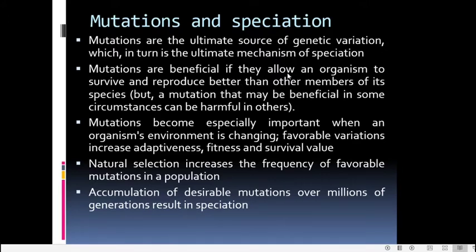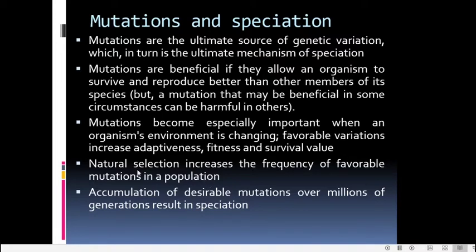If mutations are beneficial, they allow the organism to survive and reproduce better than other members of its species. Mutations become important when an organism's environment is changing, because if the mutation leads to a favorable variation, those organisms showing the mutation will have adaptiveness, fitness, and survival value. Natural selection increases the frequency of favorable mutations in a population, and the accumulation of such desirable mutations over millions of generations will result in speciation.